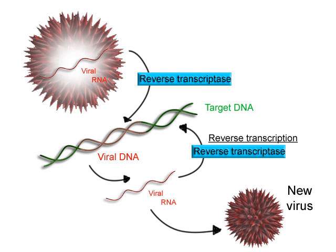In vertebrates, the majority of gene promoters contain a CpG island with numerous CpG sites. When many of a gene's promoter CpG sites are methylated, the gene becomes inhibited. Colorectal cancers typically have three to six driver mutations and 33 to 66 hitchhiker or passenger mutations. However, transcriptional inhibition may be of more importance than mutation in causing progression to cancer. For example, in colorectal cancers about 600 to 800 genes are transcriptionally inhibited by CpG island methylation. Transcriptional repression in cancer can also occur by other epigenetic mechanisms, such as altered expression of microRNAs.